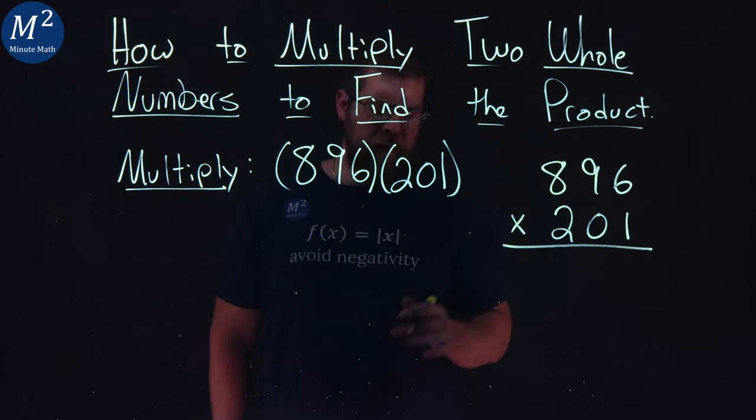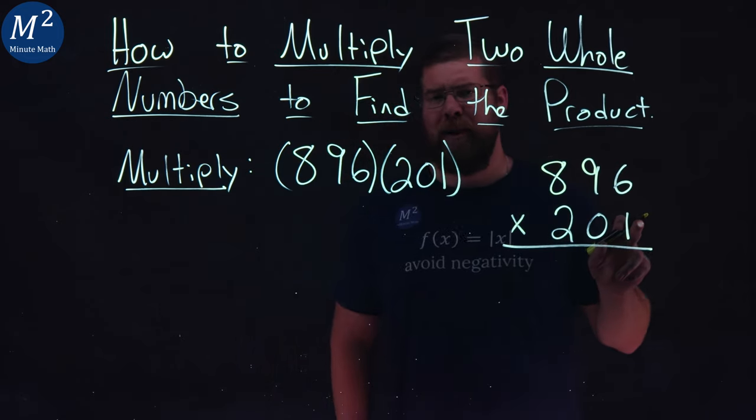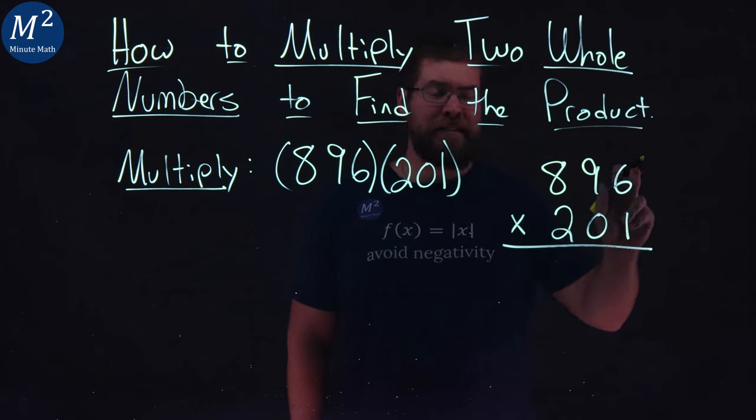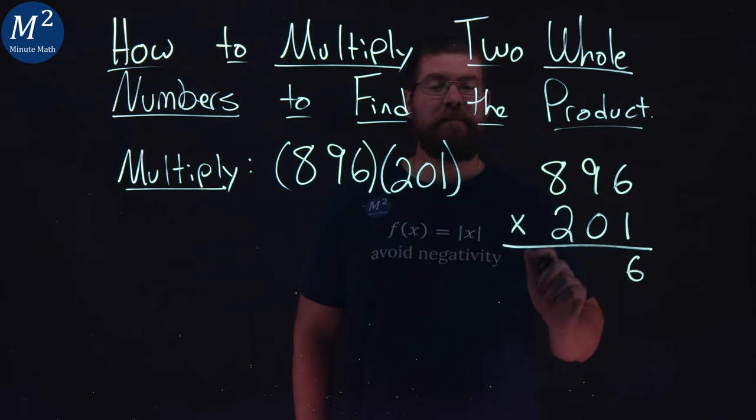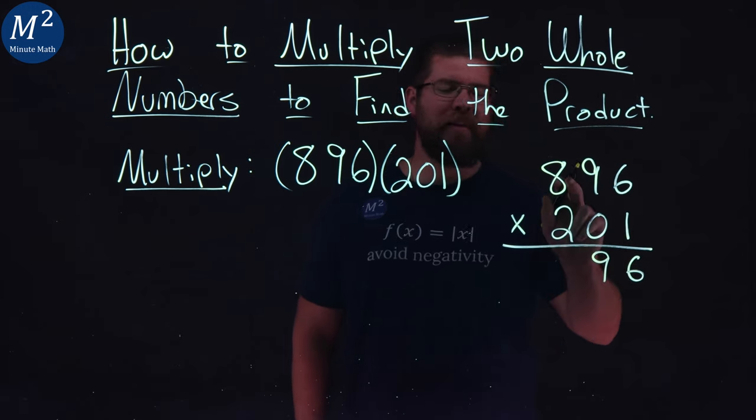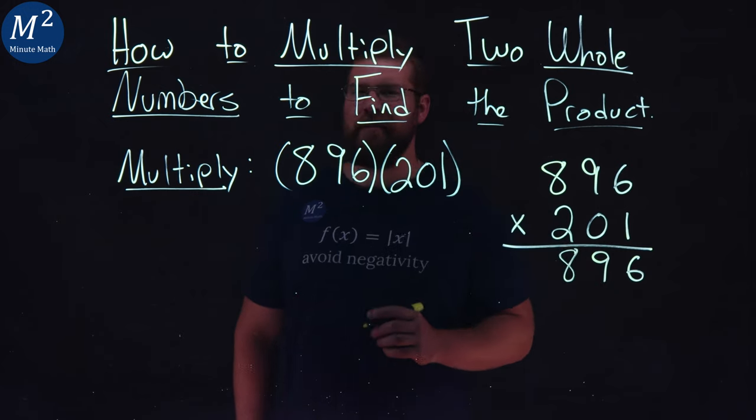Now we're going to multiply. I always enjoy when our first one's a 1, it makes it easy. 1 times 6 is 6, 1 times 9 is 9 and 1 times 8 is 8. Always enjoy that.